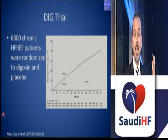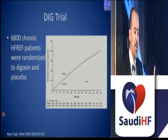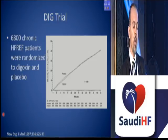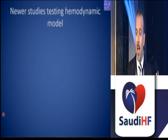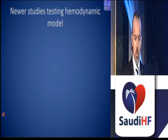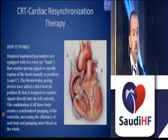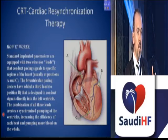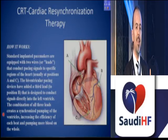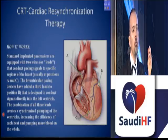The DIG trial can also be considered as testing the hemodynamic model, since digoxin produces inhibition of sodium-potassium ATPase, increasing calcium levels — making it an inotropic drug. It included a considerable number of chronic heart failure patients randomized to digoxin and placebo, and the main result was neutral. However, the hemodynamic model is not all bad — newer studies, most famously those related to CRT therapy, show that correcting asynchronous contraction in patients with left bundle branch block with cardiac resynchronization therapy results in improved mortality and morbidity.